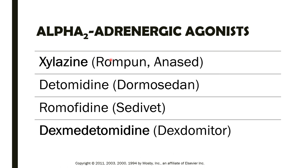We also have detomidine, with the brand name Dermocidine. It is primarily used in large animals, but less commonly. We also have romufidine, which is not as common and potentially used in larger animals. Another commonly used alpha-2 agonist is dexmedetomidine, with the brand name Dexdomitor. It is the one we use most often in small animals — dogs and cats.